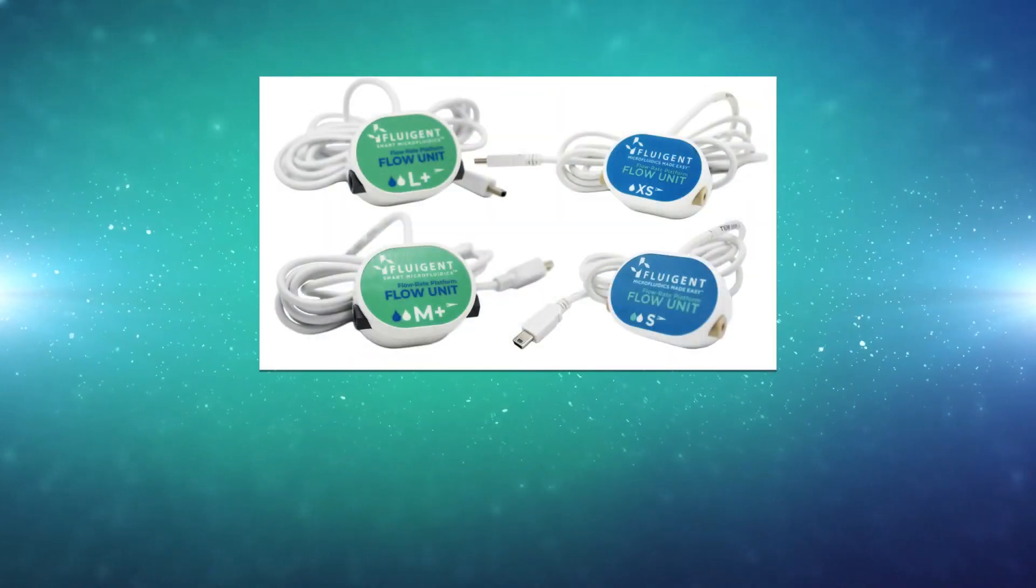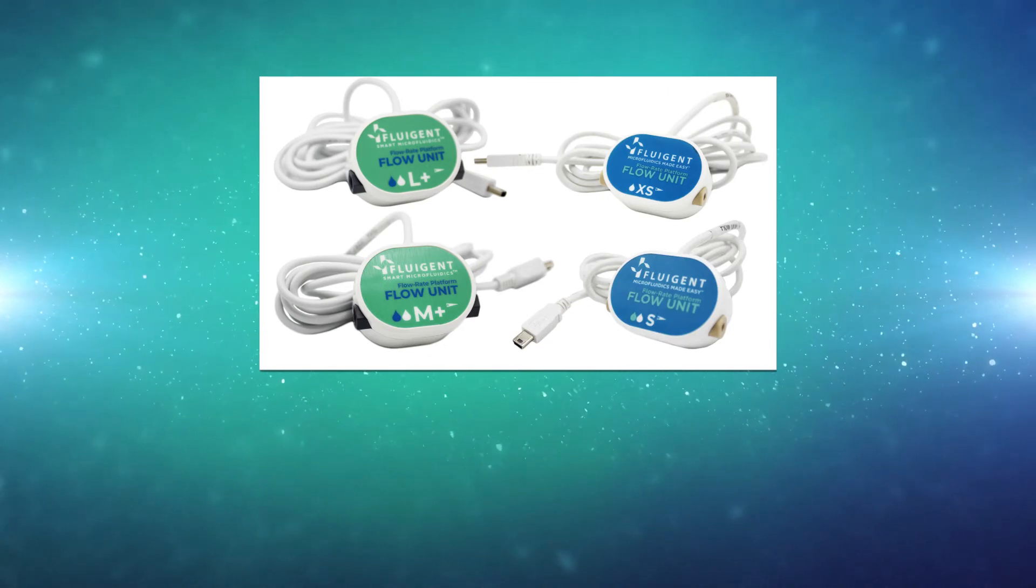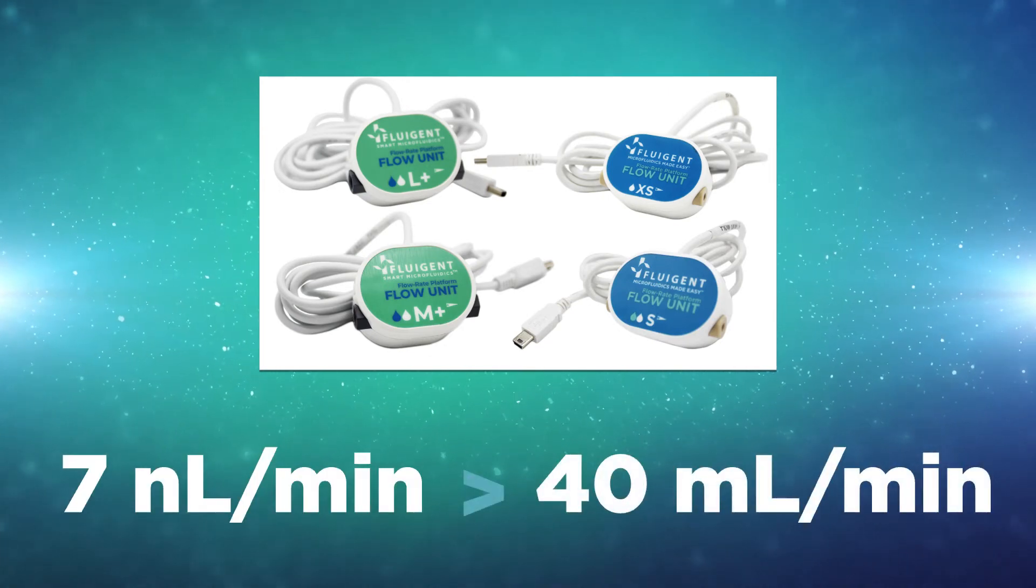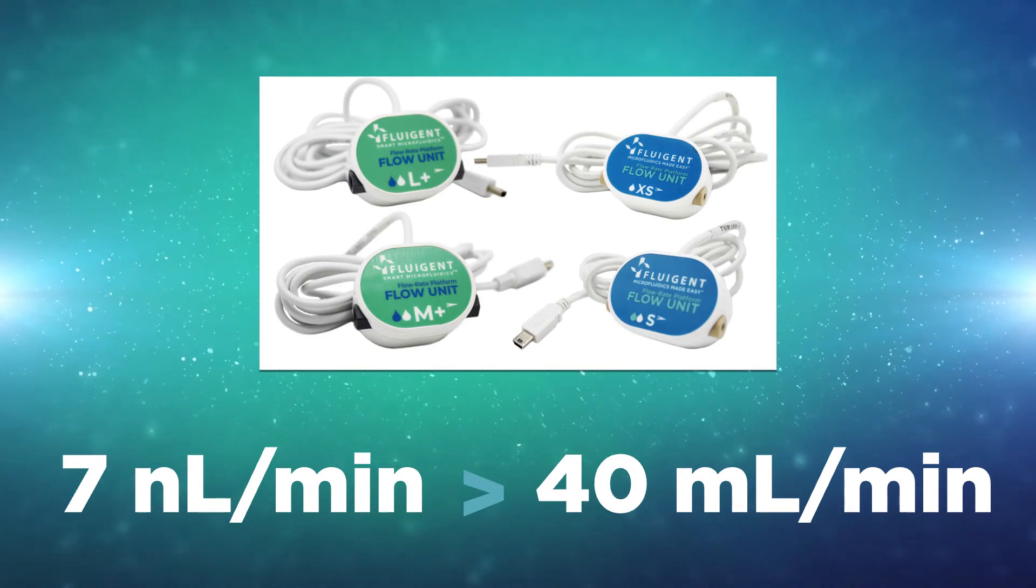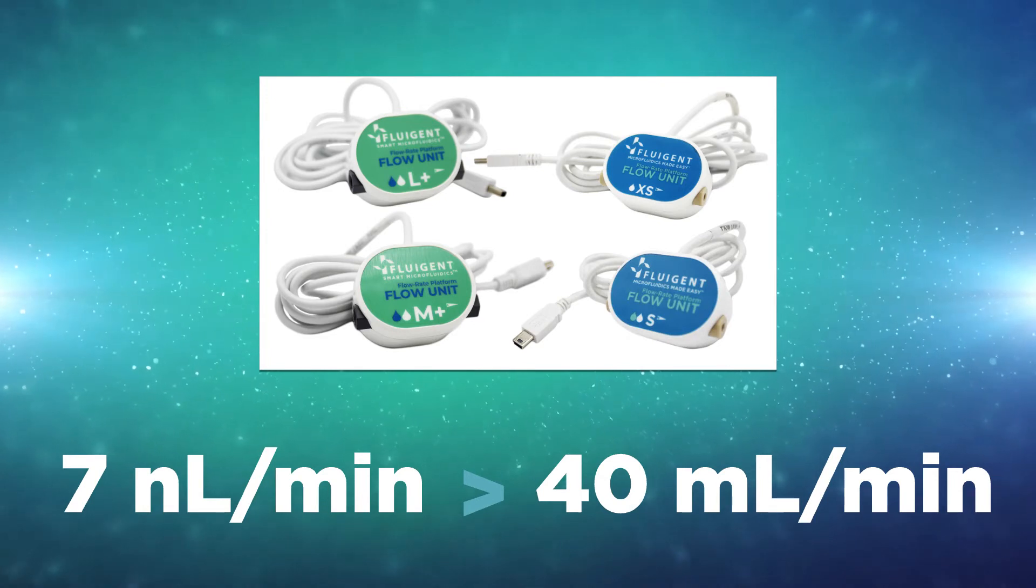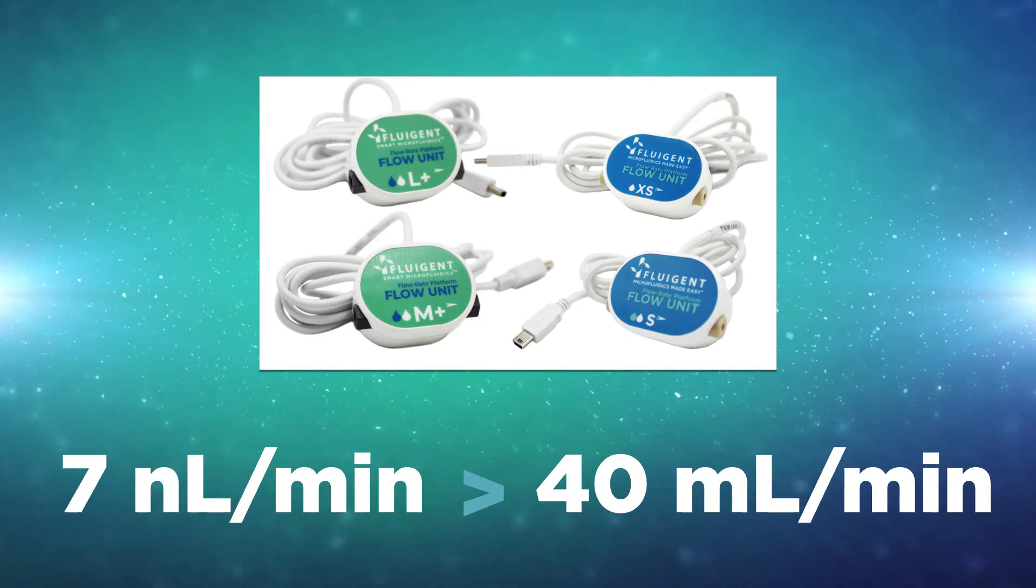Over the range of 7 nL/min to 40 milliliters per minute, intuitive to use, the Flow Units have a straightforward setup and use and allow one to monitor and control experiments within a large array of liquids that can be tuned and calibrated.